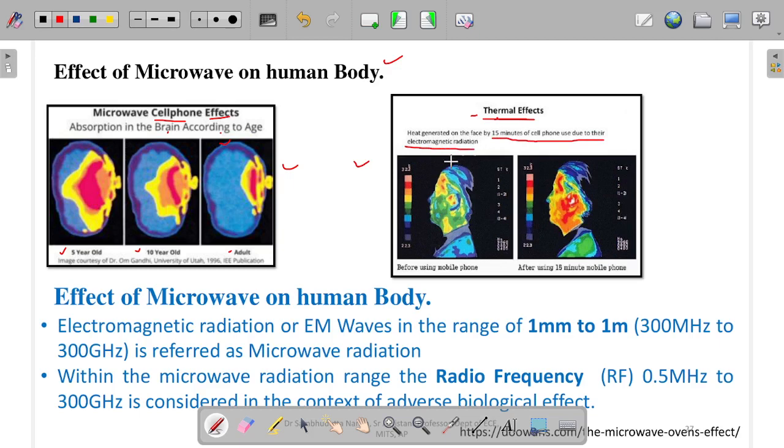This is a simulation showing before using the mobile, what is the heat map of the face, and after using the mobile. You can see almost all the face is covered with heat. Now you are clear that because of microwave radiation or mobile use, it affects the human body. This is the proof of that.